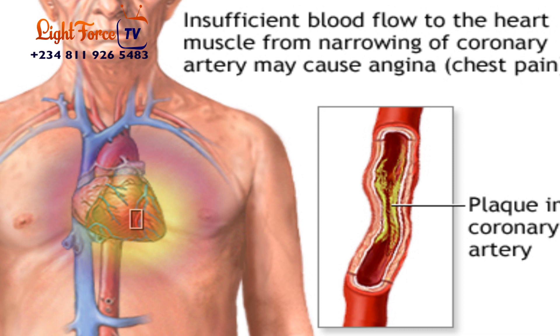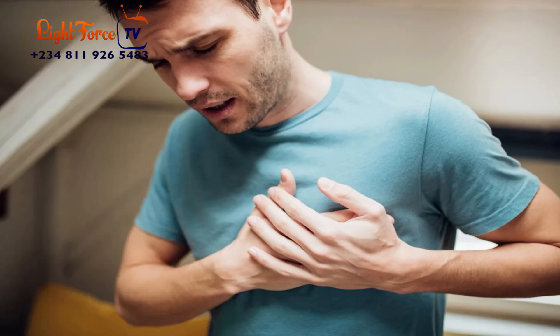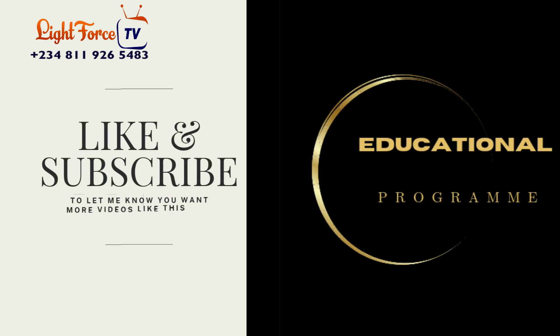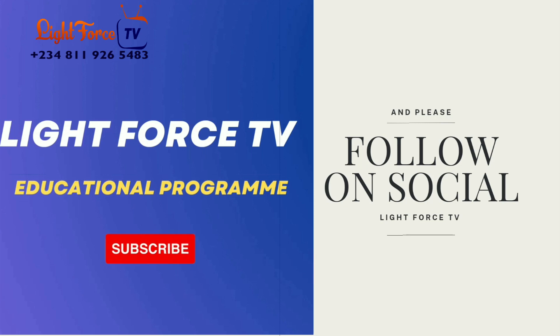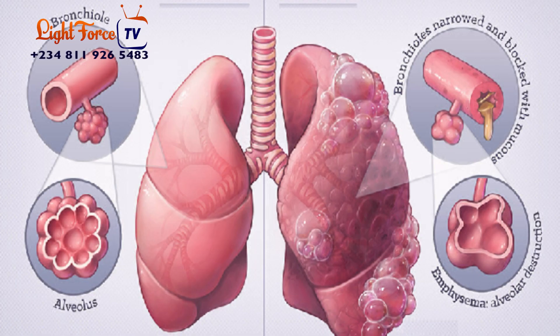Number five, we have angina. Angina can be mistaken for a heart attack. Angina is a specific type of chest pain that happens when blood flow to the heart is reduced. About 9 million Americans have chronic angina, which causes pain in the chest that feels like pressure or like your heart is being squeezed. It can cause chest pain and may also be mistaken for a heart attack, but angina does not cause permanent damage to the heart.